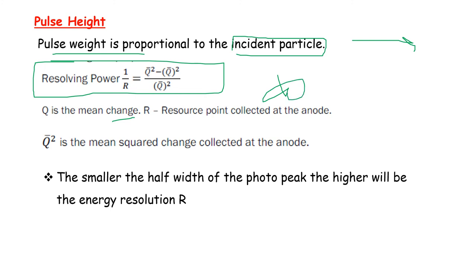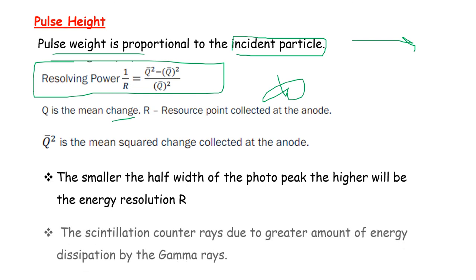The smaller the half width of the photo peak, the higher will be the energy resolution R.